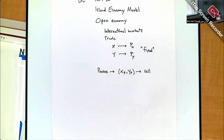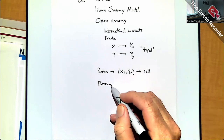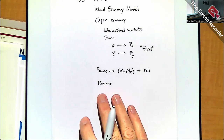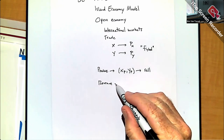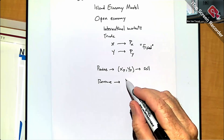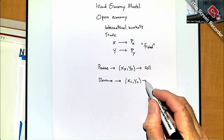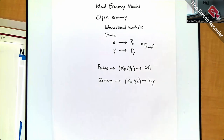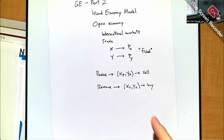Selling in the international markets generates revenue — hard currency, dollars — that I can use to return to the international markets. Given the revenue generated from exporting products, I can pick out a consumption basket XC, YC. Access to international markets means I'm not forced to consume exactly what I produce. The two can be different.